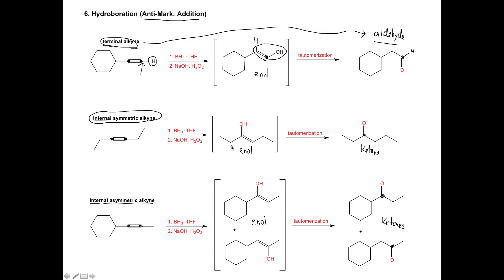What you should notice is that when you do acid-catalyzed hydration, you get out the same products as hydroboration if you have an internal alkyne — because there is no Markovnikov position. Only when you have a terminal alkyne can you get out an aldehyde with hydroboration.